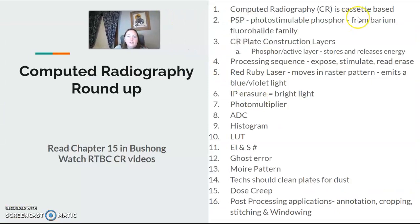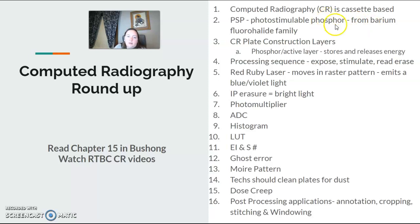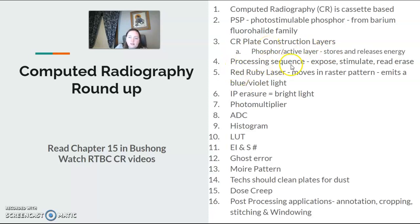So what should we know out of this whole CR unit? Computed radiography is what CR stands for, and it's cassette-based. It uses a photostimulable phosphor from the barium fluorohalide family. We went over the layers of the CR plate — the main one we worry about most is the phosphor active layer. That's the main player. It catches the x-rays and holds them until they're released.